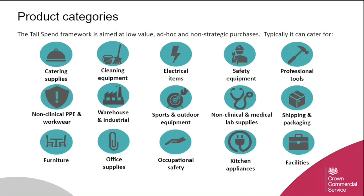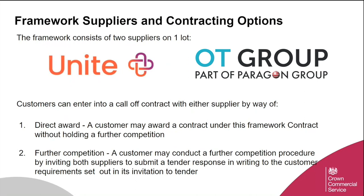This slide provides a very high-level overview of the product categories available on the platform. There are currently in the region of 8 million individual products available and this continues to grow as further categories and product lines are added. The tailspend solution consists of two suppliers on one lot — UNITE and OT Group. Customers can enter into a call-off contract with either supplier by way of direct award or further competition. A customer may award a contract without holding a further competition by developing a clear statement of requirements and applying the direct award criteria to establish which supplier provides the most economically advantageous tender.